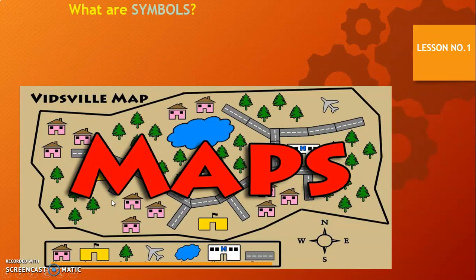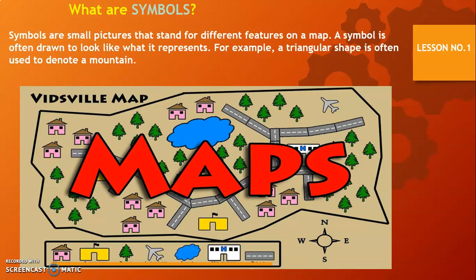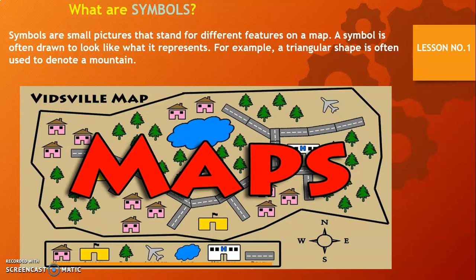Let's see what are symbols. Symbols are small drawings or small pictures that stand for different features on a map. In this map, you can see small pictures. A symbol is often drawn to look like what it represents. For example, this symbol represents a home because its shape looks like a home. A triangle is often used to denote a mountain — in maps, the mountain will be shown by the symbol of a triangle. The triangle symbol always represents a mountain.